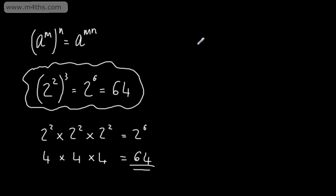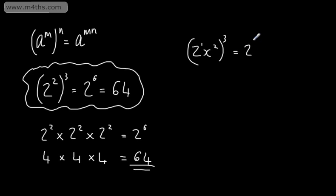For example, if we had 2x squared and we wanted to cube this, what we would need to do is raise each of these terms to the power of 3. We need 2 to the power of 1 — as we're multiplying the powers, we're certainly not multiplying the 2. So we'd have 2 to the power of 3 times 1, which is 3, multiplied by x to the power of 2 times 3, which is 6. 2 to the power of 3 gives us 8, so we write this as 8x to the power of 6.